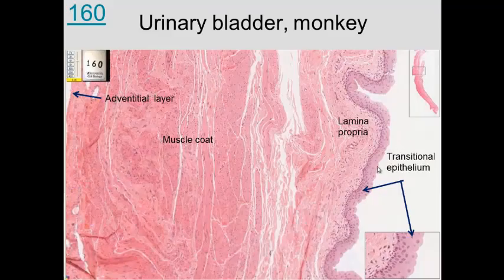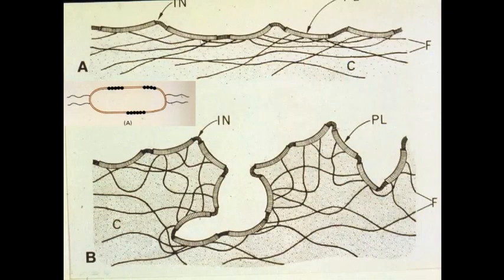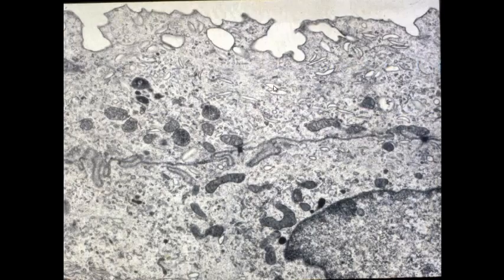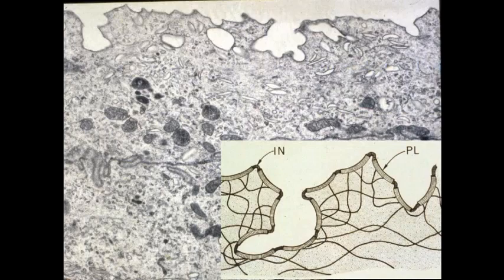The transitional epithelium has to transform itself depending on whether the urinary bladder is full or empty. If the bladder is full, the cells are stretched out. If the bladder is empty, they fold back on themselves. Rigid proteins come together to make portions of the membrane rigid.